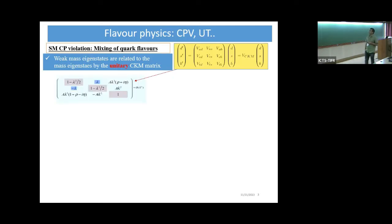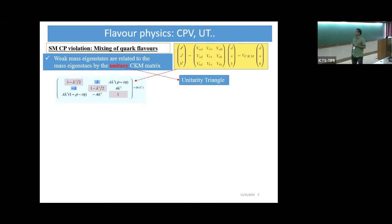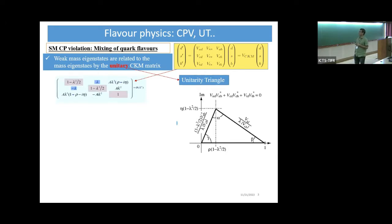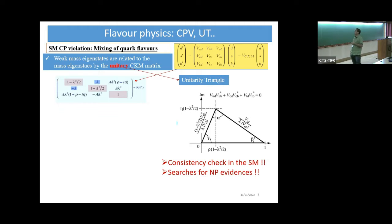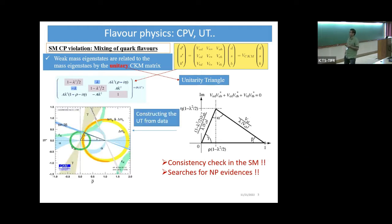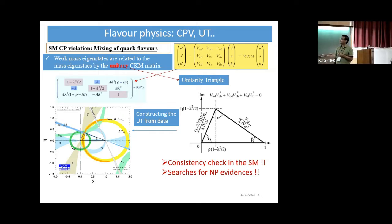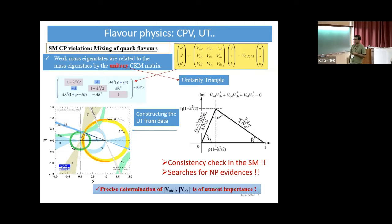By now we understand that the CKM matrix is one of the important ingredients for our understanding of CP violation in the standard model. The goal of flavor physics is basically to construct the unitarity triangle and check consistency within the standard model, and in the process we may see some evidence for new physics. This is the current status — you can see that the results of various observables have been projected in the rho-bar eta-bar plane. The triangle is converging to a unique apex region, and VUB and VCB play an important role in determining this. Therefore, precise estimates of these observables are necessary.